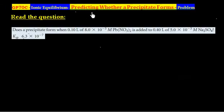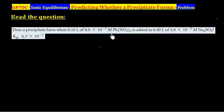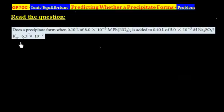This question is related to predicting whether a precipitate forms or not. Does a precipitate form when 0.1 liter of 8×10⁻³ M lead nitrate is added to 0.4 liter of 5×10⁻³ M sodium sulfate? The KSP value for lead sulfate is given as 6.3×10⁻⁷.